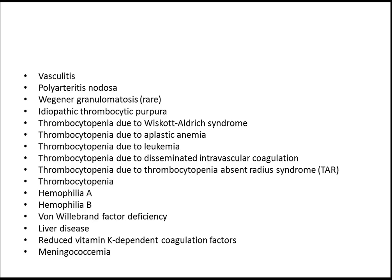Idiopathic thrombocytopenic purpura is very important. Thrombocytopenia is also very important, and thrombocytopenia is due to these diseases: Wiskott-Aldrich syndrome, aplastic anemia, leukemia, and DIC.